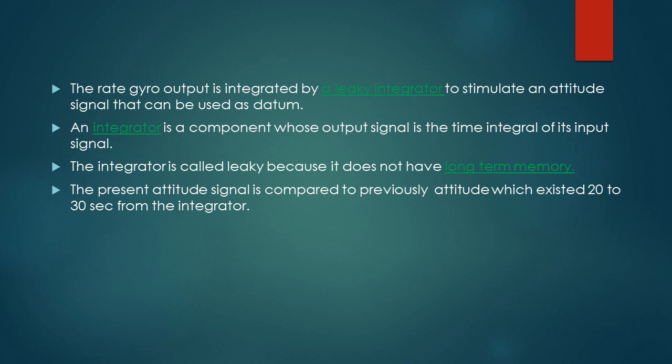So when the rate gyro sends the present attitude signal, the present attitude signal will be compared to the previous attitude, which is about 20 to 30 seconds ago from the integrator.